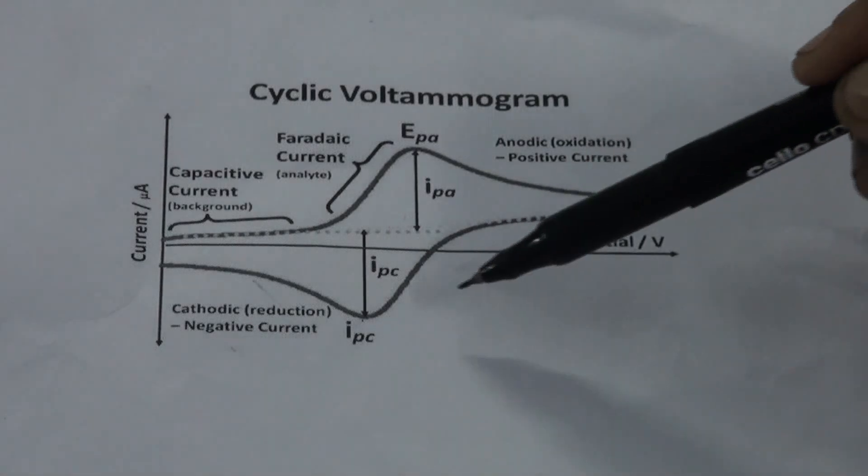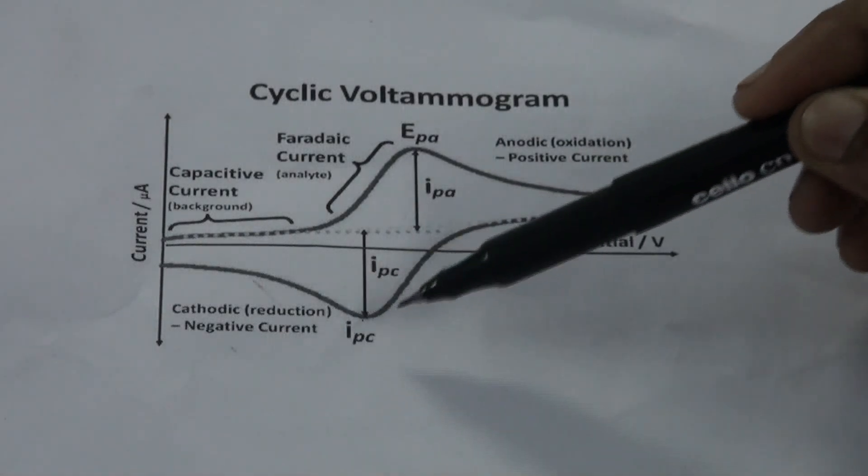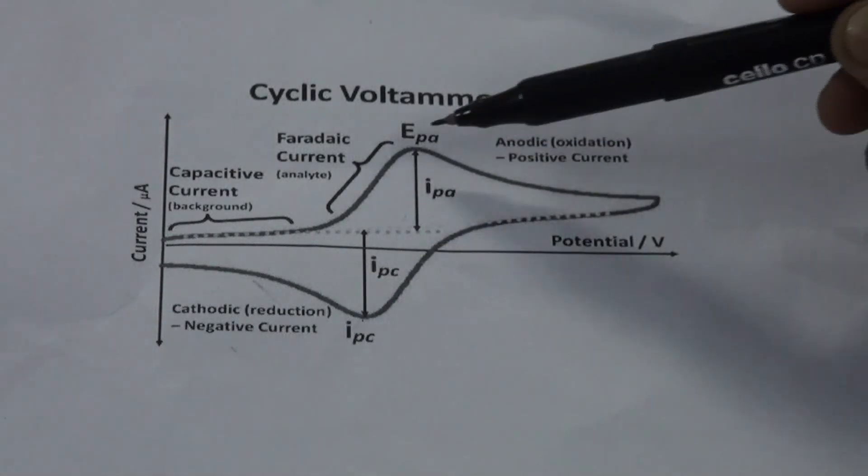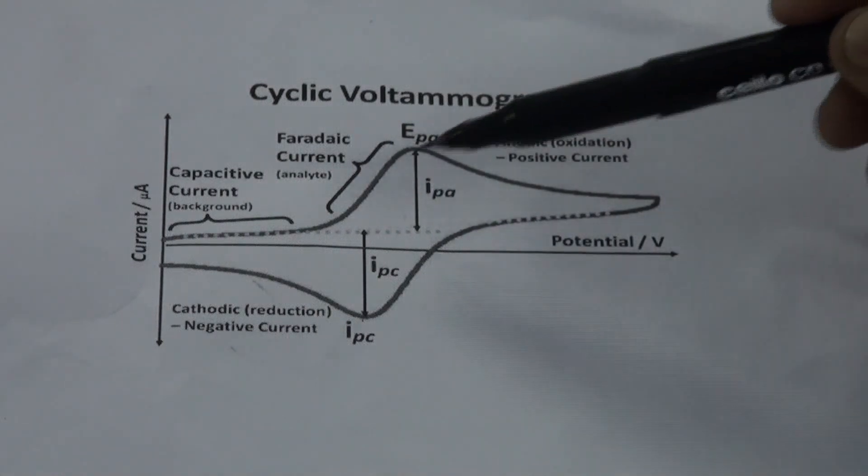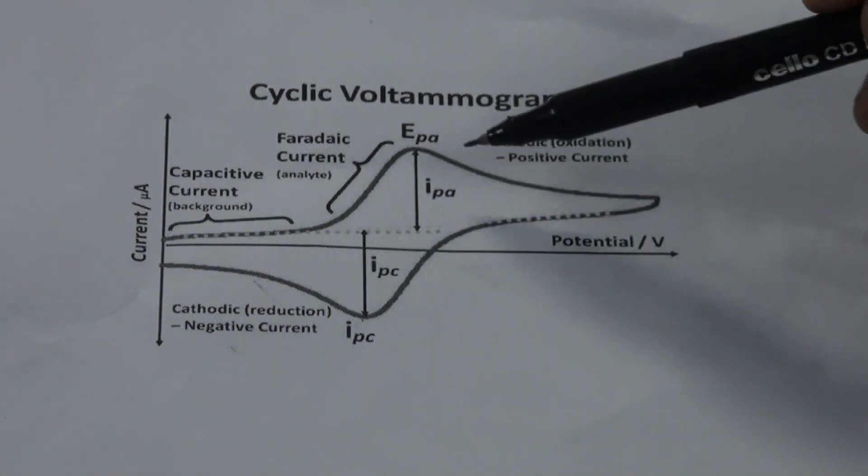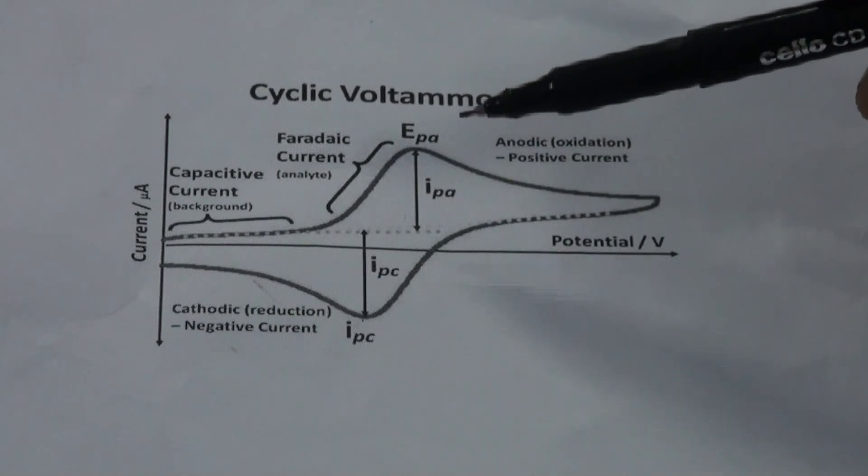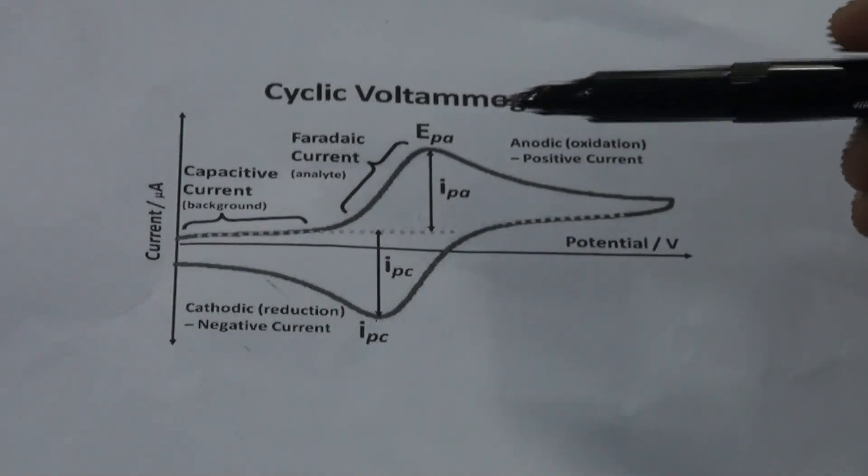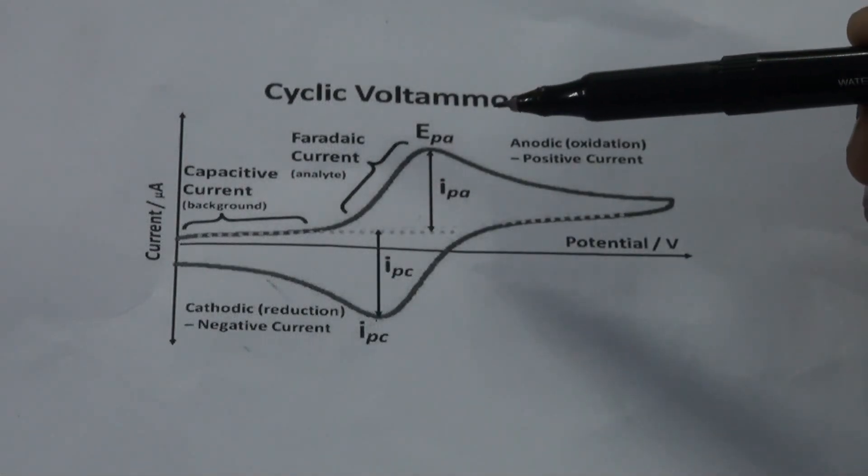When the potential is reversed, we get the reduction peak, and above is the oxidation peak, showing the potential and current values obtained of the analyte. To know whether the reaction is reversible or not...